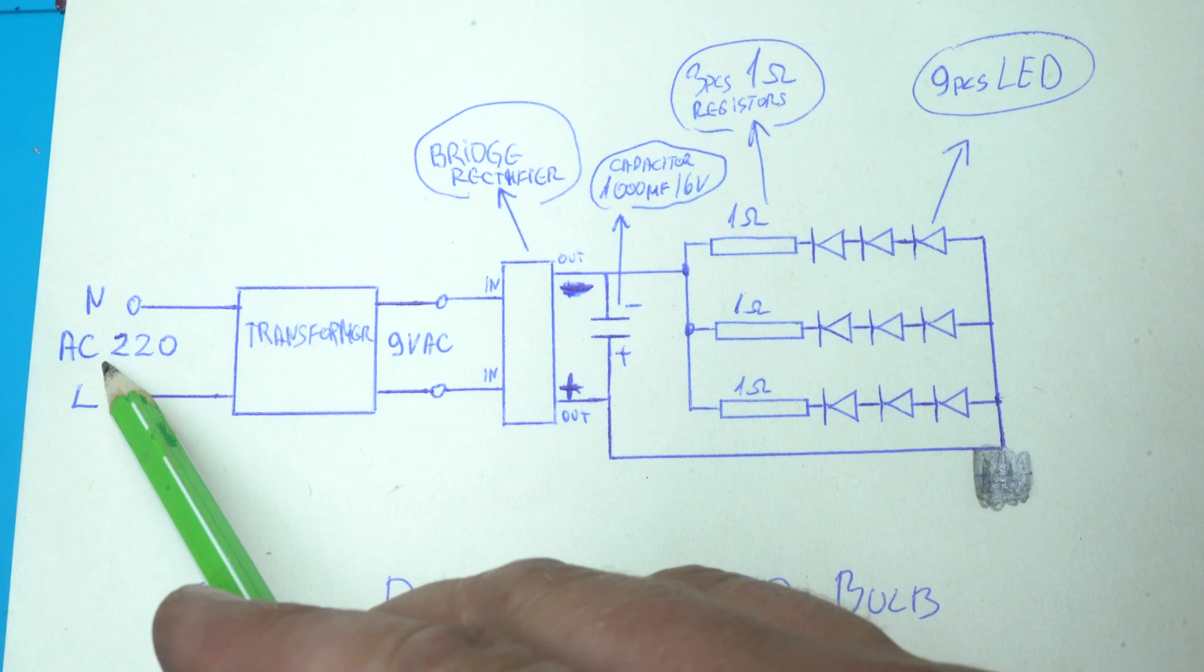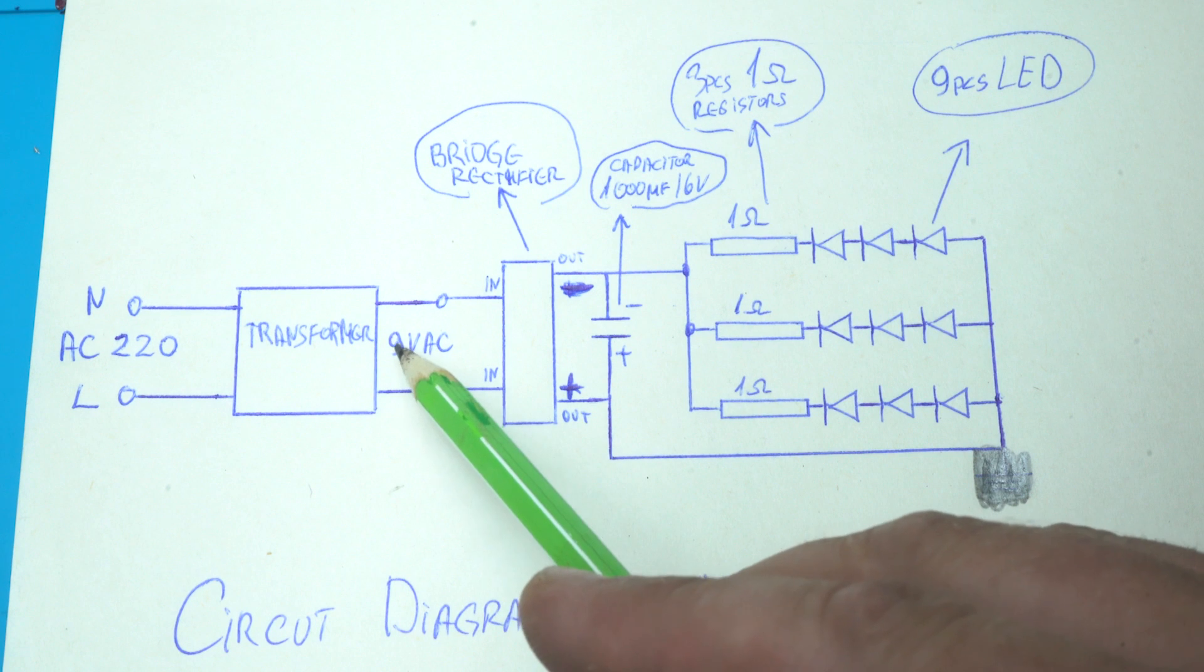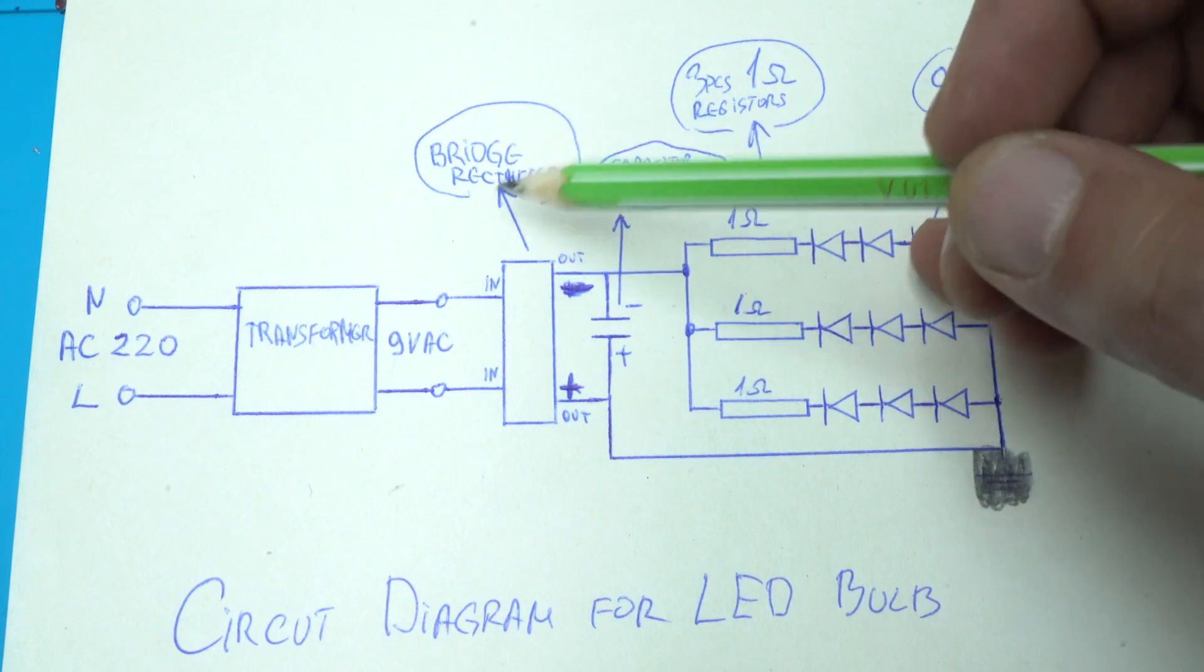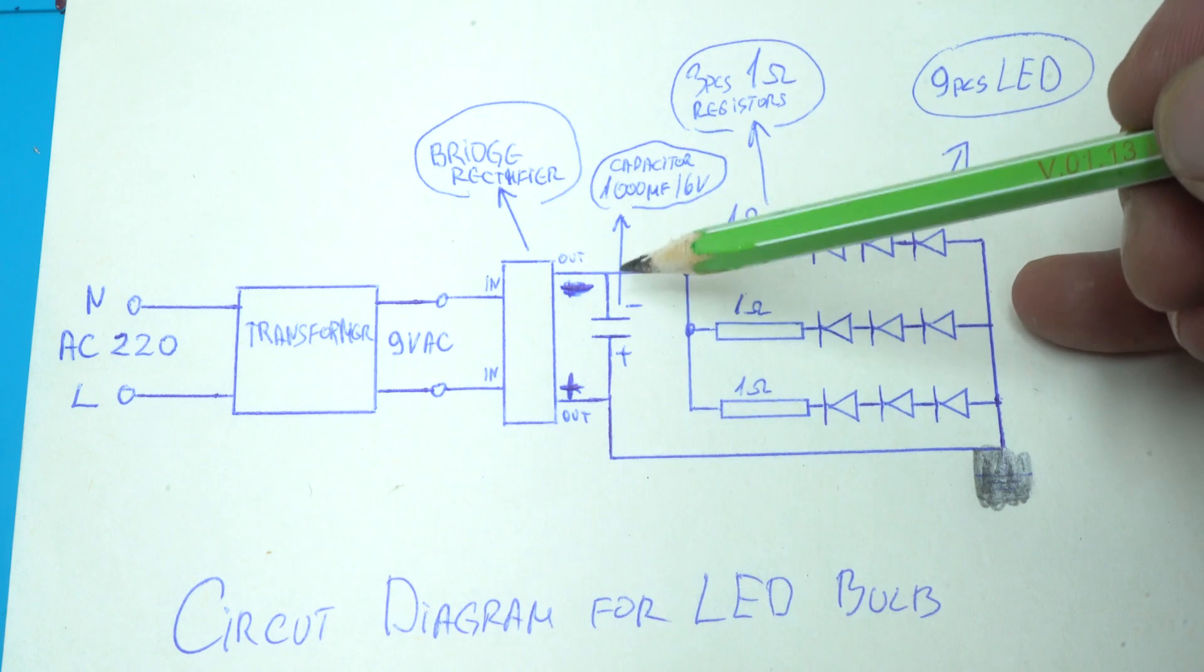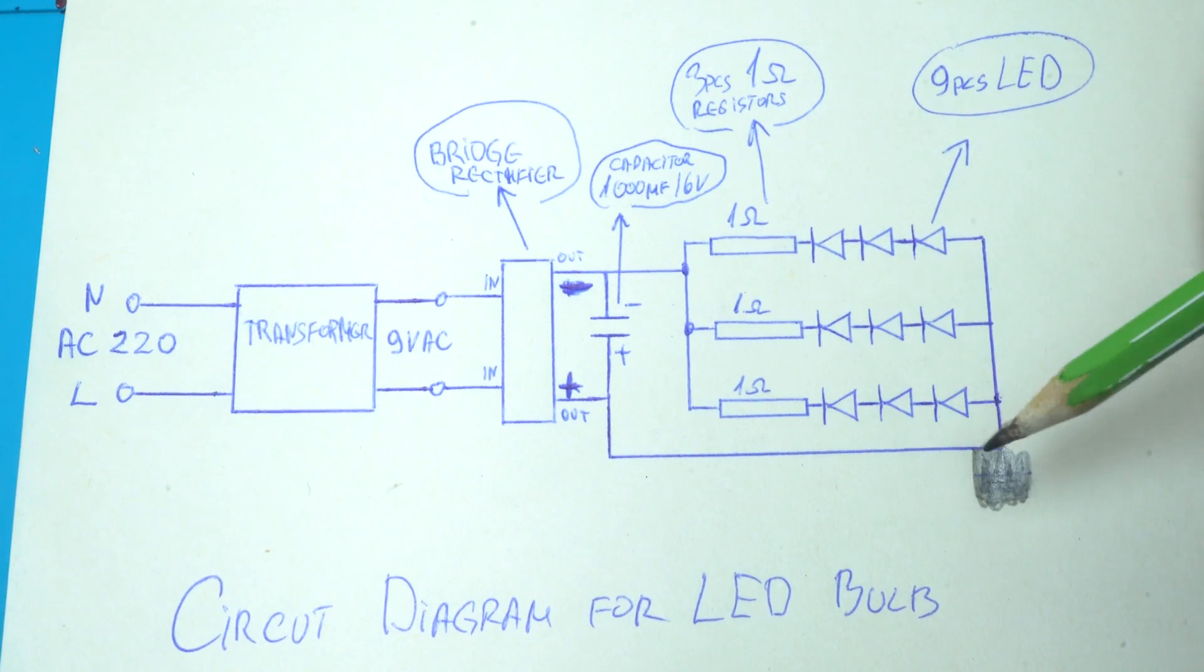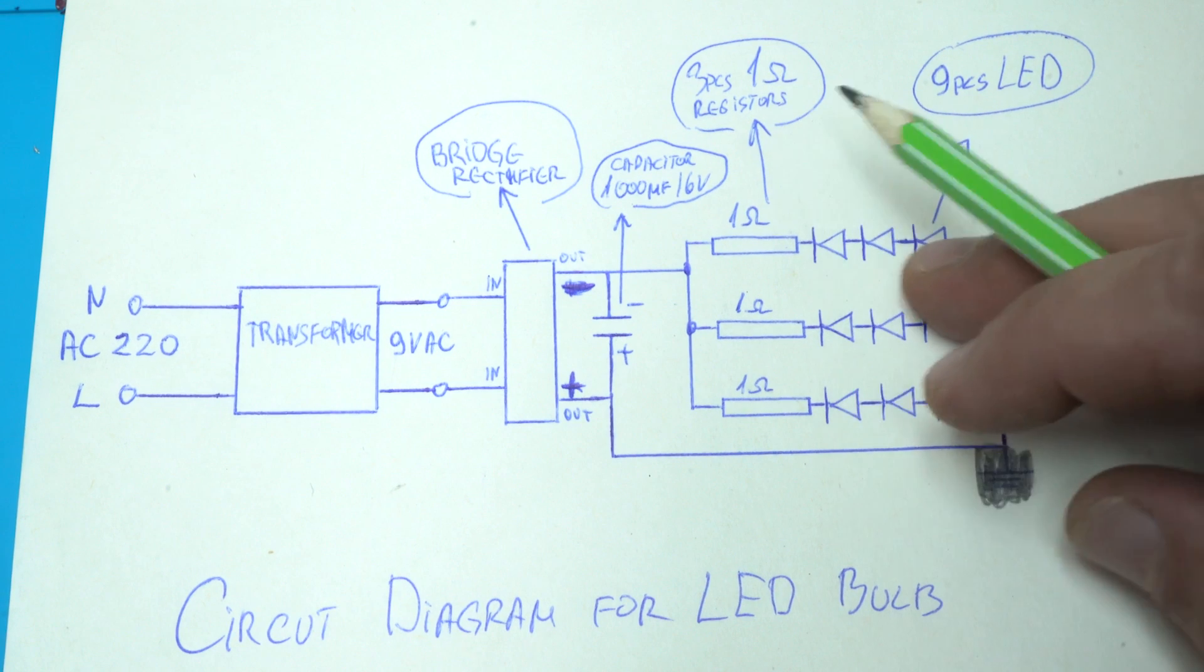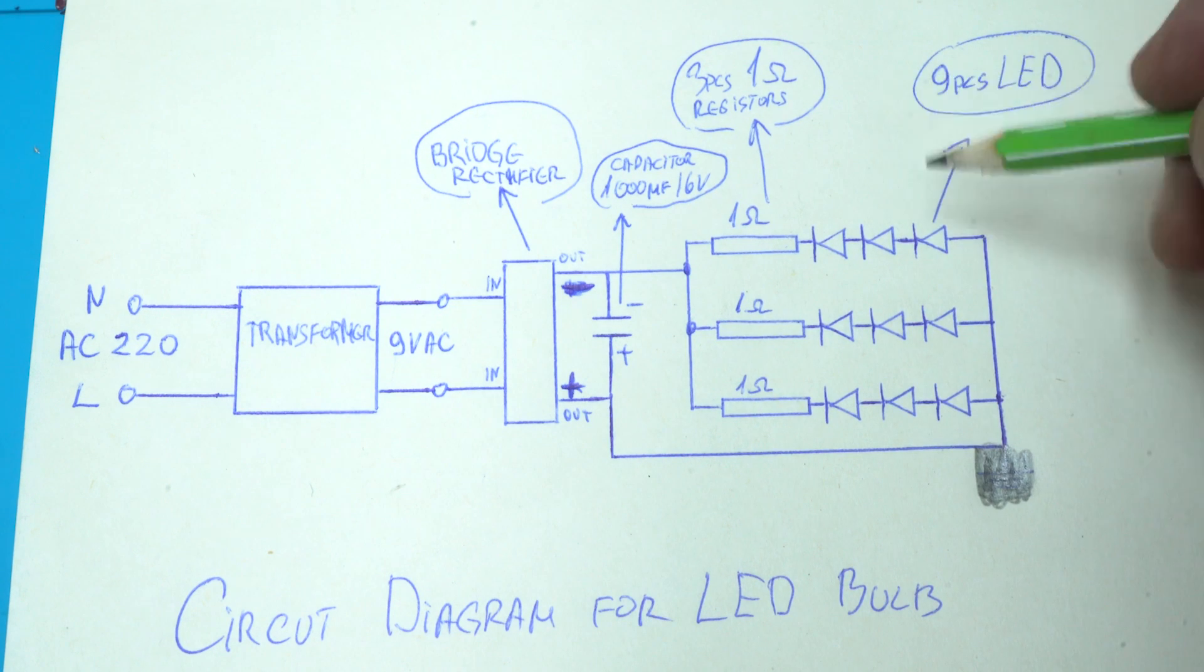From the beginning we have an AC voltage of 220 volts that goes to the transformer and from here we get 9 volt AC that needs to be converted to DC. That's why we are using a bridge rectifier. After that we are soldering a capacitor of 1000 microfarads 16 volts, three resistors one ohm each for each array. Each array is made out of three LEDs that are connected in series and the ends are going to the positive.